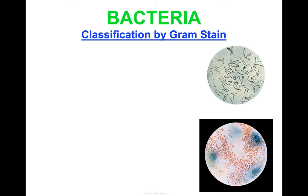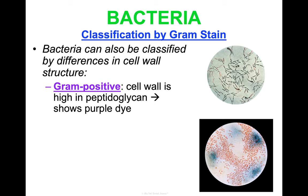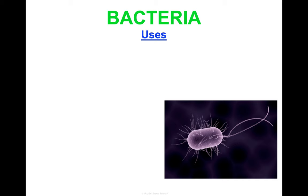Another way to classify bacteria is by how they respond to being stained — specifically the Gram stain. This has to do with differences in their cell wall structure. Gram positive bacteria have a lot of peptidoglycan in their cell wall, so when stained, they show up as a purple dye under a microscope. Gram negative bacteria have a thin layer of peptidoglycan but also a polysaccharide layer on the outside, so instead of showing purple, they appear red under the microscope.